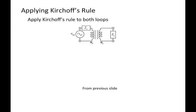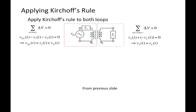How does that work? Again, there are two loops and we can apply Kirchhoff's loop rule to each side. The secondary side is the same as before. On the primary side, some of the signal generator voltage is going to be dropped across impedance one, and some is going to be dropped across the primary.